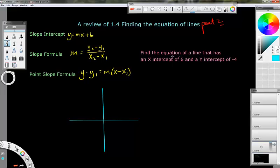So here we go. This big problem here says find the equation of a line that has an x-intercept of 6 and a y-intercept of negative 4. And a lot of people will say, I can't do this, I don't have points.